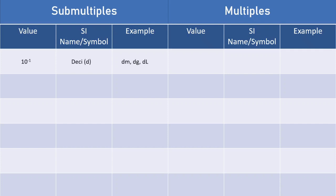The first submultiple is deci, which means 10 to the power minus 1 — that is, one-tenth of the base SI unit. For instance, a decimeter is one-tenth of a meter, a decigram is one-tenth of a gram, a deciliter is one-tenth of a liter. The prefix for deci is a lowercase d. Going further down, we have centi, denoted by a lowercase c — for instance, centimeters, centigrams, centiliters. This is one one-hundredth of the base SI unit. Then we have milli, which is one one-thousandth, given by a lowercase m.